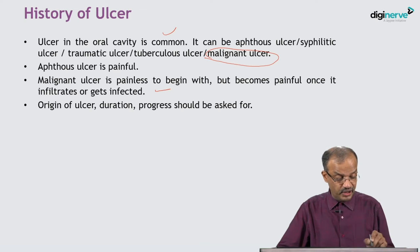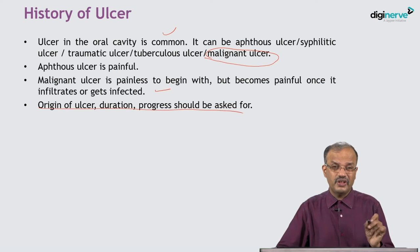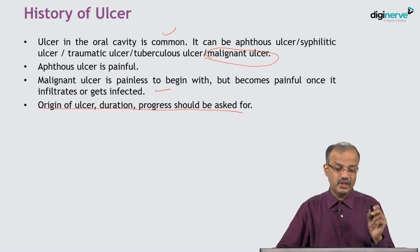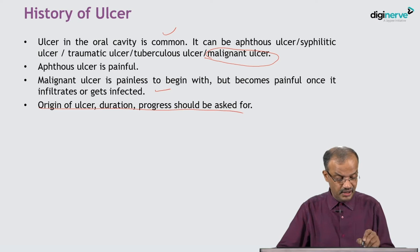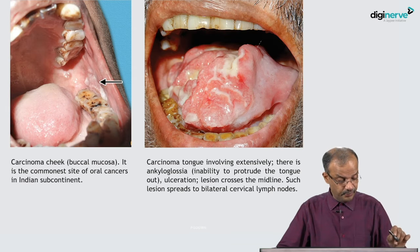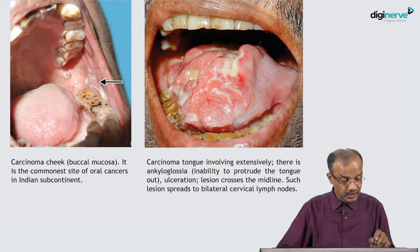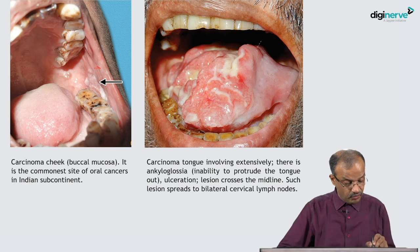Origin of the ulcer, duration, and progress should be asked — I have discussed how to describe an ulcer in detail in earlier topics. You have to ask all those things in detail. Carcinoma of the cheek is the commonest site of oral cancers in the Indian subcontinent — this is very common not only in India but across the Indian subcontinent including Pakistan and Bangladesh.